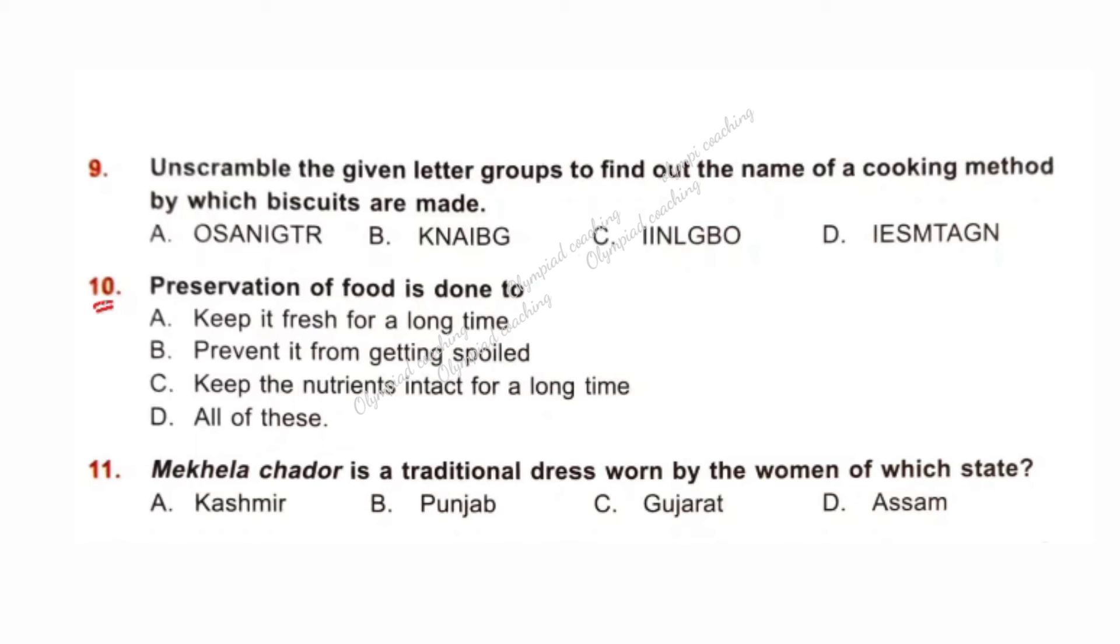Question number 10. Preservation of food is done to: Option A, keep it fresh for a long time. Option B, prevent it from getting spoiled. Option C, keep the nutrients intact for a long time. Clearly, we do preservation of food for all these purposes. So, option D is correct. All of these.